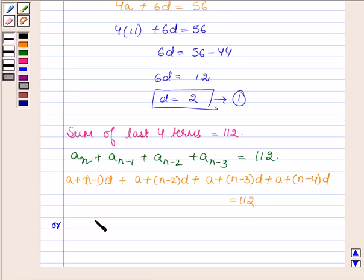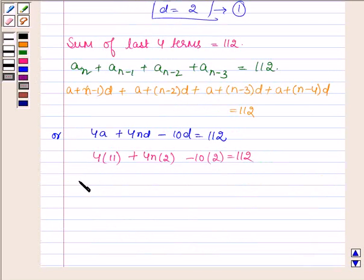Or we can say that 4A plus 4ND minus 10D is equal to 112. Now substituting the values of A and D, we have 4 into 11 plus 4N into 2 minus 10 into 2 is equal to 112. Or we have 44 plus 8N minus 20 is equal to 112. Or 8N is equal to 112 minus 24.